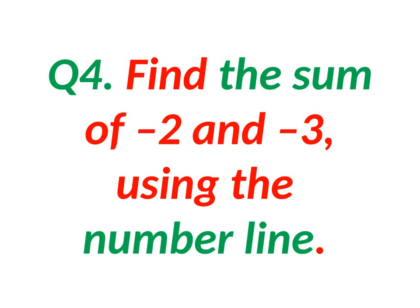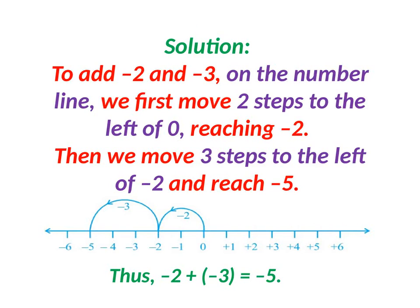Find the sum of minus 2 and minus 3 using number line. First draw the number line. From 0 to minus 2, then from minus 2 take another 3 points to the left hand side. It reaches minus 5. The answer is minus 5.